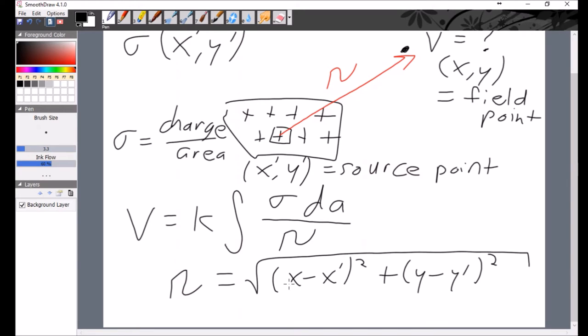And so we're integrating over the prime coordinates. So that's going to have to be a dA prime here. So our dA prime, if we're using Cartesian coordinates, is going to be dx prime, dy prime. So a little bit of area has a little bit of x and a little bit of y. We might switch over to polar coordinates at one point, but it's just as easy to use x and y and change up your integration bounds.